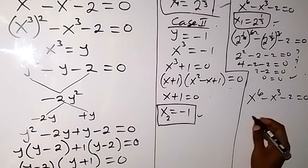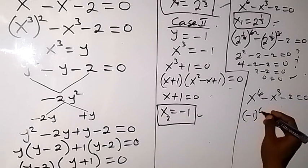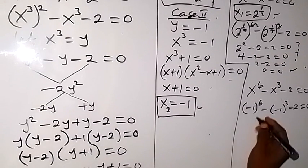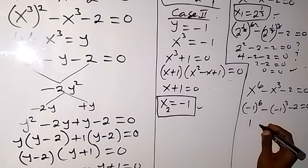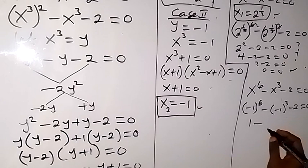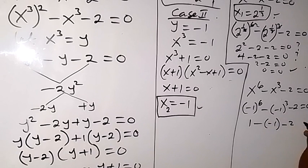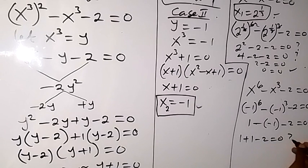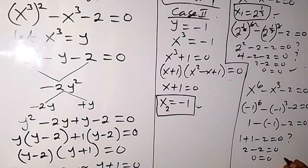When we put minus 1: minus 1 raised to power 6, then minus minus 1 raised to power 3, minus 2, equals to 0. Minus 1 raised to power 6 — any time we raise a negative to an even number, we get a positive — so that's 1. Minus, then when we raise a negative to an odd power we get a negative, that's minus 1, then minus 2, equals to 0. So we have 1 minus minus 1 minus 2, which is 1 plus 1 minus 2, giving us 2 minus 2, which equals 0. So 0 equals 0 — that means x equals to minus 1 also satisfies the equation.